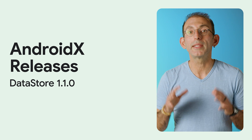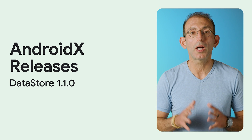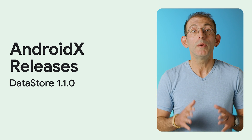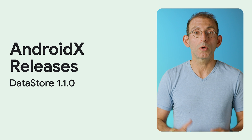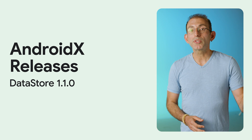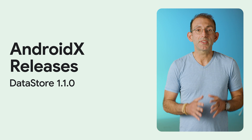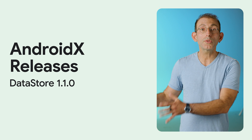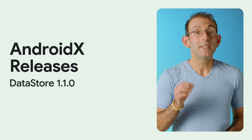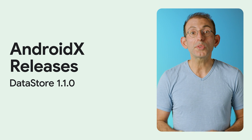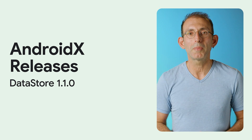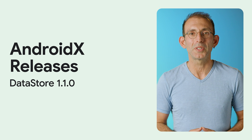Datastore 1.1 now supports multiple processes accessing the same file, with support for observability across processes. The new storage interface allows you to customize how to store or serialize your data models. This release also comes with support to use Datastore in Kotlin multi-platform projects.